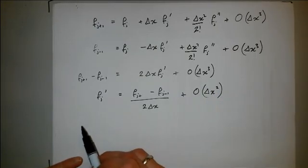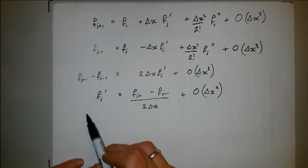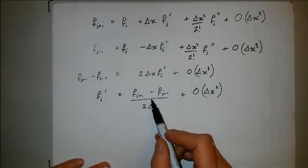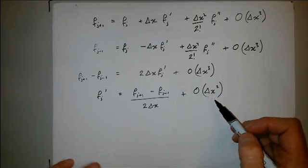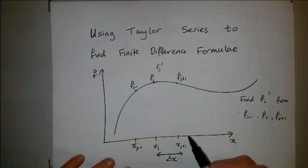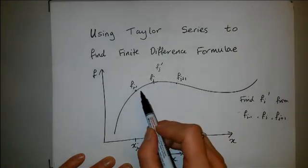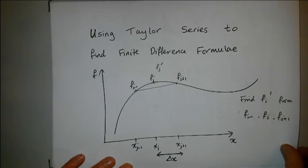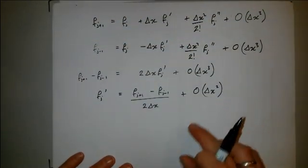So this is now my finite difference formula for the gradient at f_j, so that's f'_j, using the surrounding points. It doesn't, in fact, use f_j, and it's second order accurate. The error is proportional to delta x squared, which is what you'd have guessed. The gradient here is going to be, the best estimate from these, is going to be that minus that, divided by twice the distance between them. But using the Taylor series, we can say how accurate it's going to be.